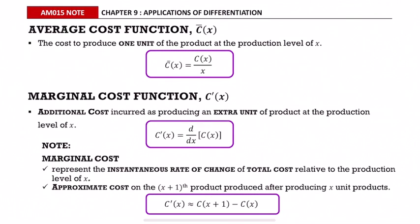Average cost function is denoted as c-bar of x. It is the cost to produce one unit of the product at the production level of x. Average cost function equals the cost function divided by x.